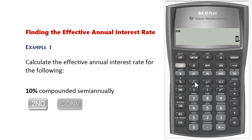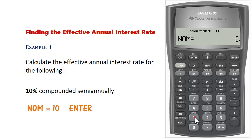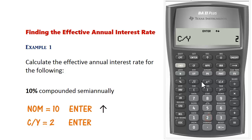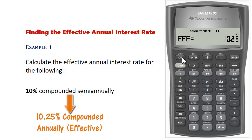Press 2nd, ICONV. It shows nominal — enter 10, then press Enter. Scroll up to CY. Semiannually means it's compounded twice a year, so set CY equals 2, press Enter. Scroll up again and compute effective. This shows us that 10% compounded semiannually is equivalent to 10.25% effective annual interest rate, or 10.25% compounded annually.